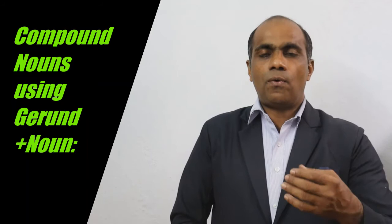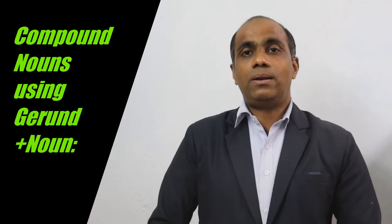another way of making compound noun is a compound noun made of gerund plus noun. So, in this case, the gerund form comes first, gerund form comes first, and then the noun is added. Examples,